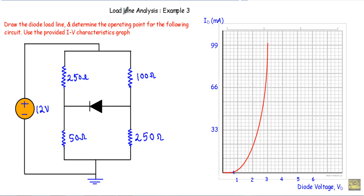In this video I will show you another example of diode load line analysis — Example 3. The task is to draw the diode load line and determine the operating point for the following circuit using the provided IV characteristics graph. For this circuit we have to draw the diode load line, determine the coordinates of the operating point, and use this IV characteristics graph.